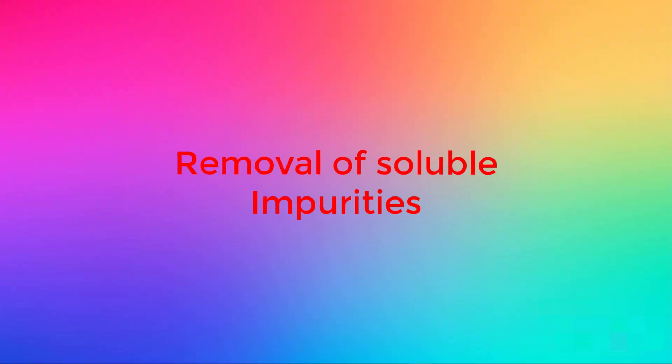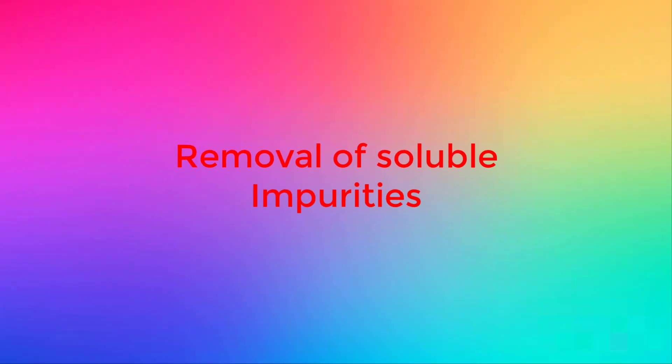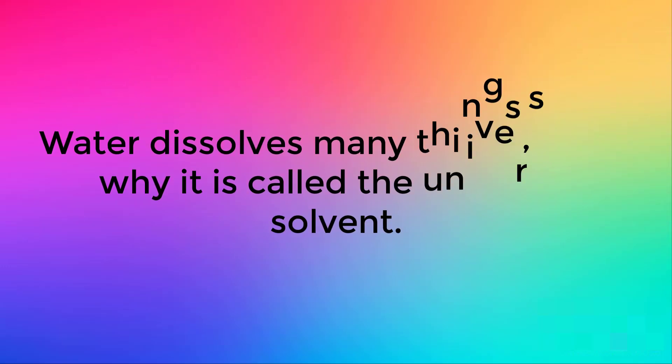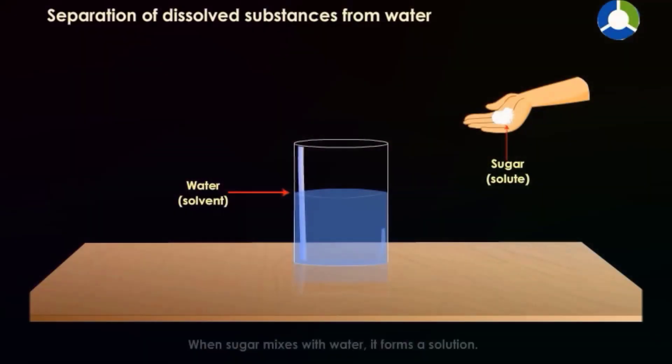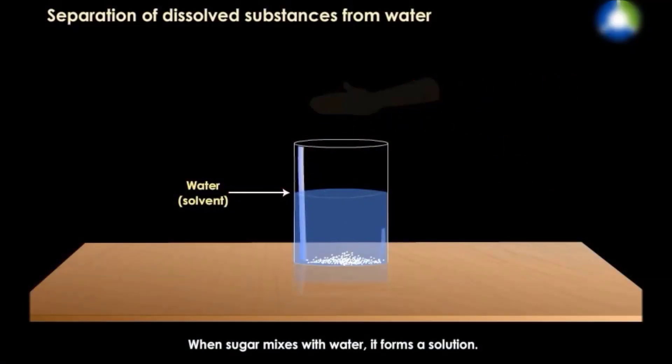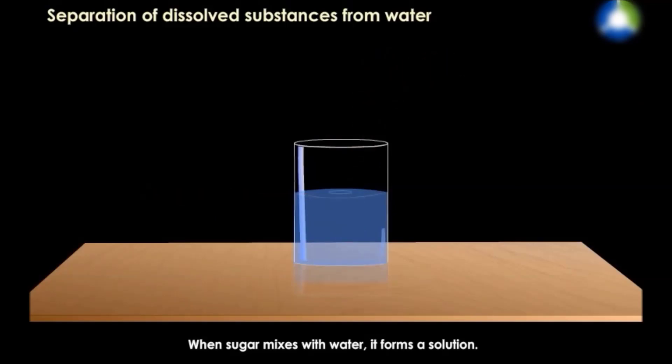Now we will discuss how we can remove soluble impurities from water. As we know that water dissolves many things, that's why it is called universal solvent. When sugar mixes with water, it forms a solution. Here sugar is a solute and water is solvent.